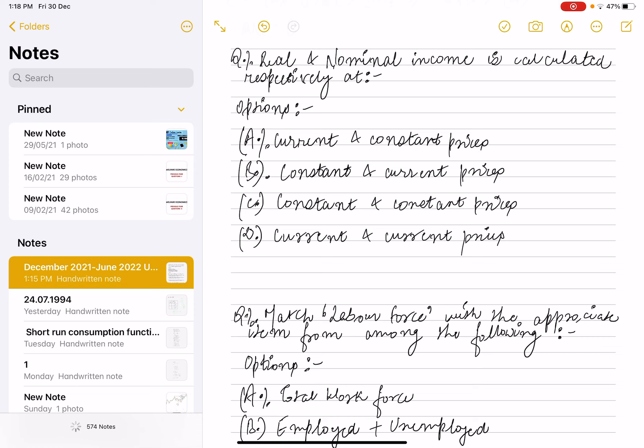third option says constant and constant prices, or option D which talks about current and current prices. So real income is calculated at constant prices and nominal income is calculated at current prices because nominal includes the inflation factor. So the correct answer is option B.